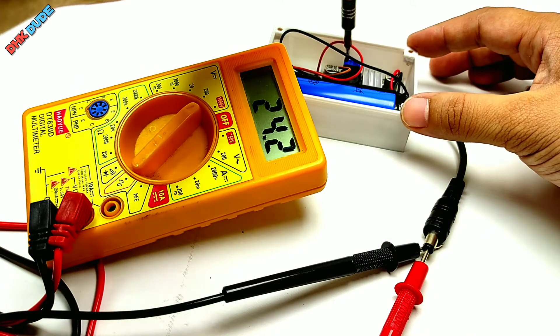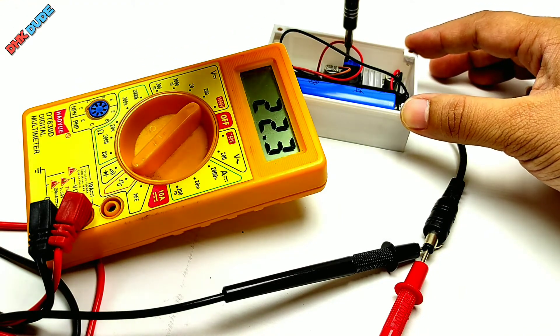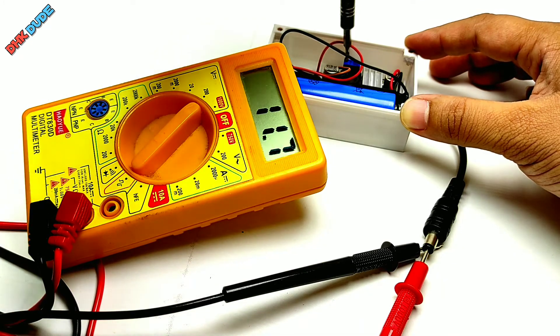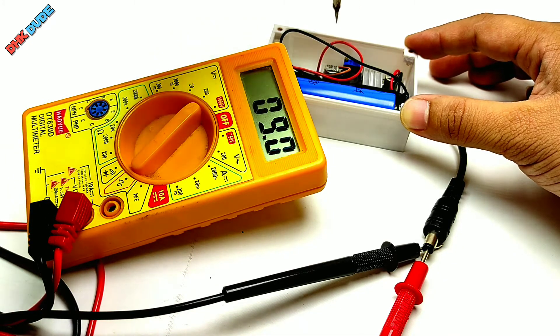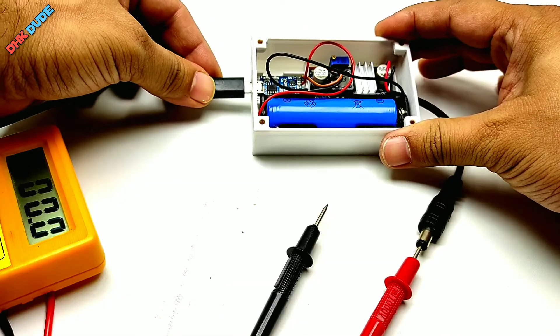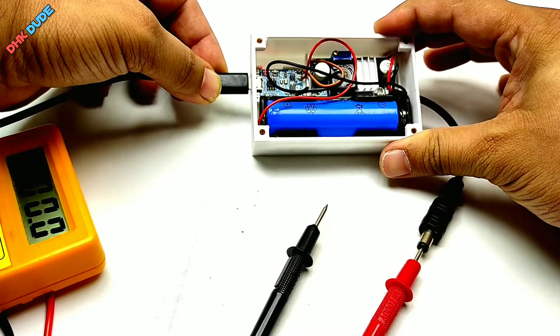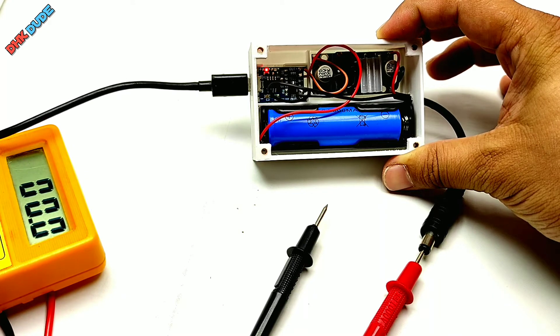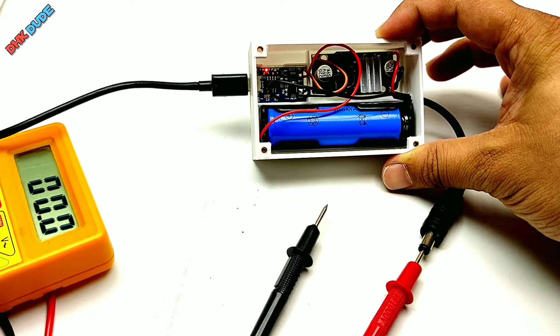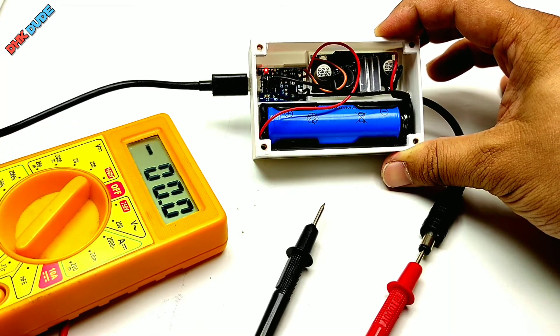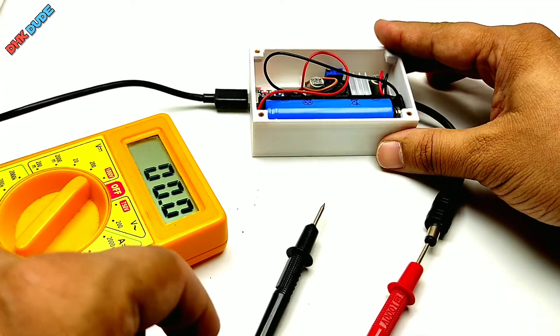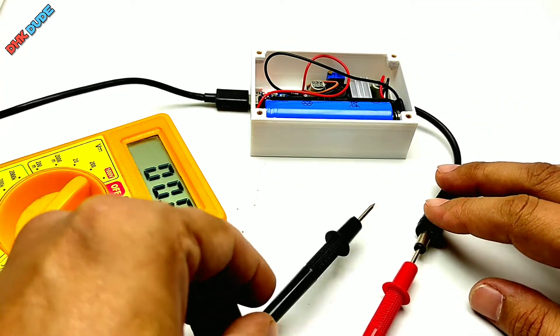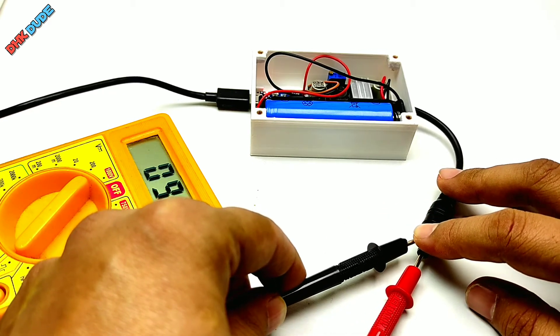We are almost done. Measure the output voltage using multimeter. My TP-Link Wi-Fi router runs on 9V so we need to reduce the voltage. We have potentiometer on the XL6009 module, adjust it to reduce the voltage as shown in this video. Also check the voltage when UPS is connected to the power supply.